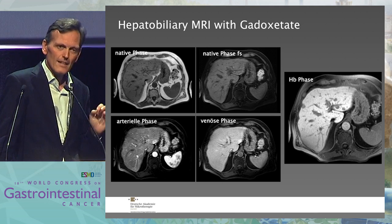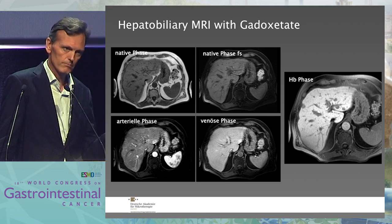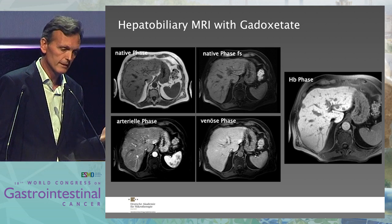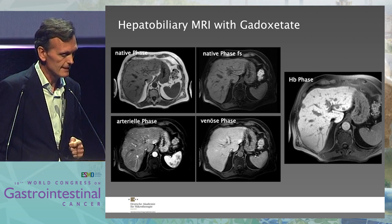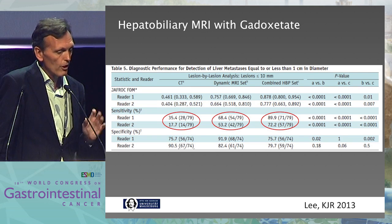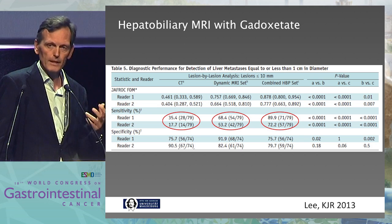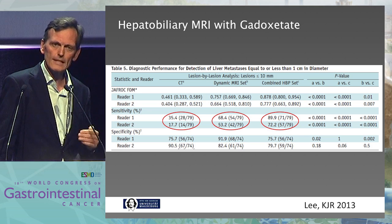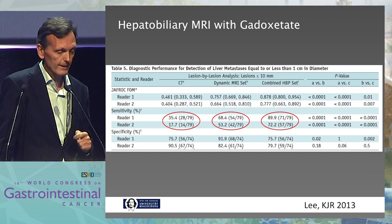If you add the hepatobiliary late phase, this is a quite common finding where we find more tumors in the liver. It's normally not as striking as here where the tumor was not visible at all before, but this is also a very common finding. There's going to be more tumors. This is a study from Korea for the combination of hepatobiliary imaging with dynamic MRI, or dynamic MRI alone, or CT. Close to 100% lesion depiction is achieved if you combine your MRI with the hepatobiliary MRI.